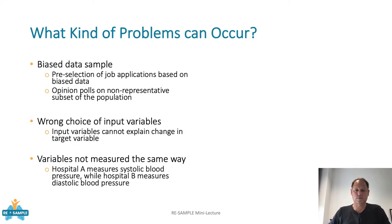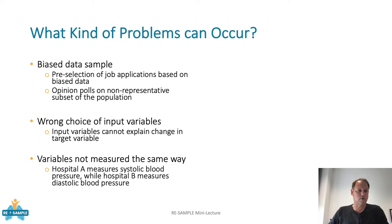What kind of problems can occur? First, the data used for training can be biased. This is classically known for predictive models that do pre-selection of job applications: if trained on a biased dataset containing previously successful and unsuccessful applications, and for whatever reason specific groups of persons were underrepresented in that data, then during training the influence of those groups is outweighed by others, and the model just replicates this statistical underrepresentation in its predictions.